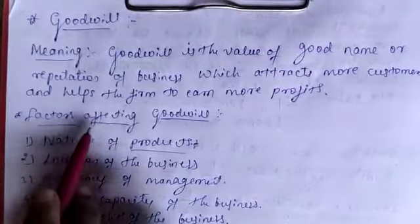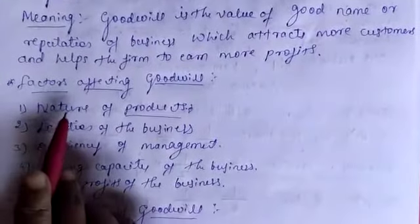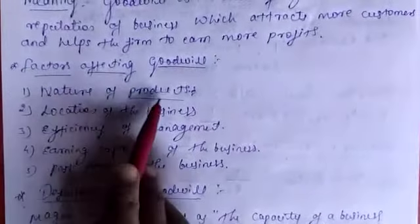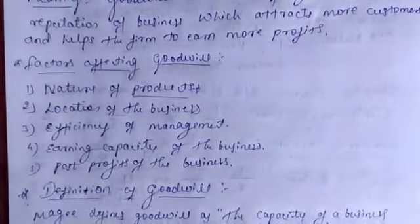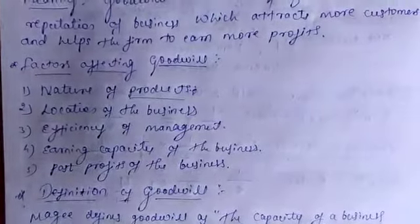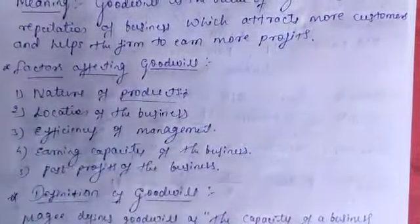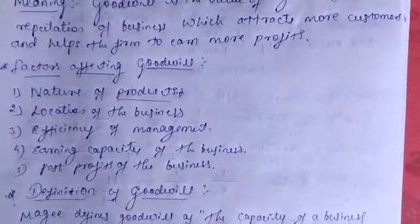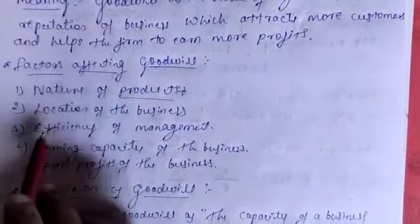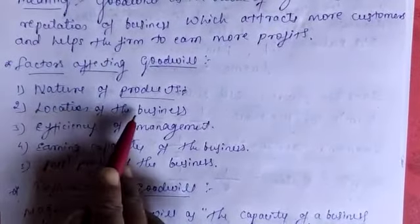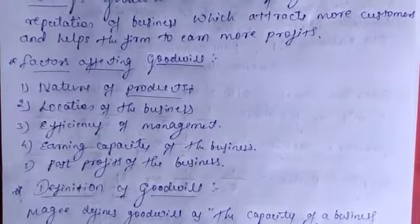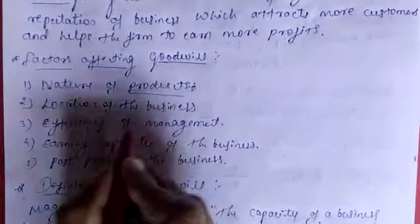Next, factors affecting goodwill. The first factor is the nature of product — the type of product you are producing determines your goodwill. If your product is good, your goodwill will also increase. The second factor is location of the business — the place where you locate your business also affects your goodwill.